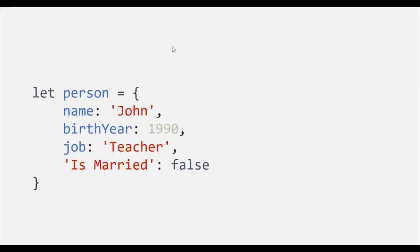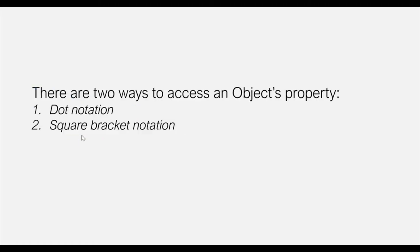In the last lecture, we created this person object with four properties: name, birth year, job, and is married. Now what we want is to access these properties and use them in our program. To access the property of an object, there are two ways in JavaScript. We can use dot notation or we can use square bracket notation.